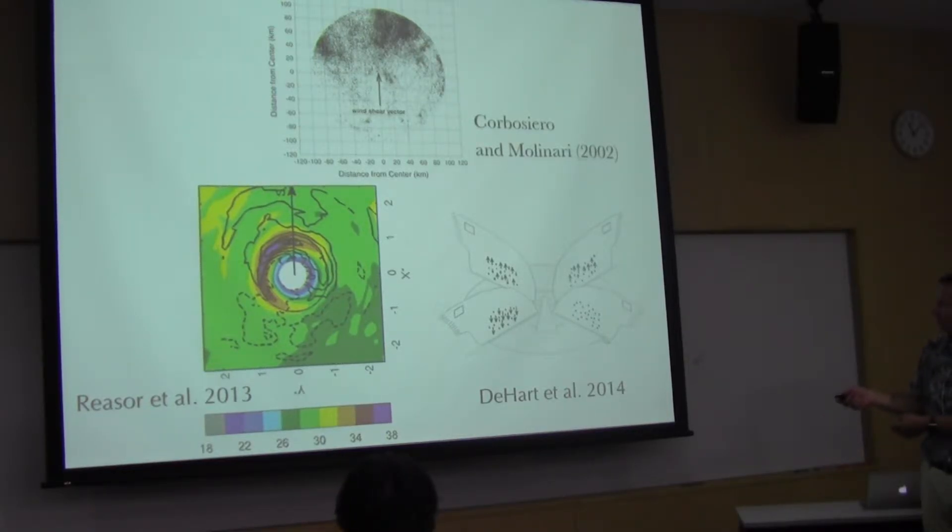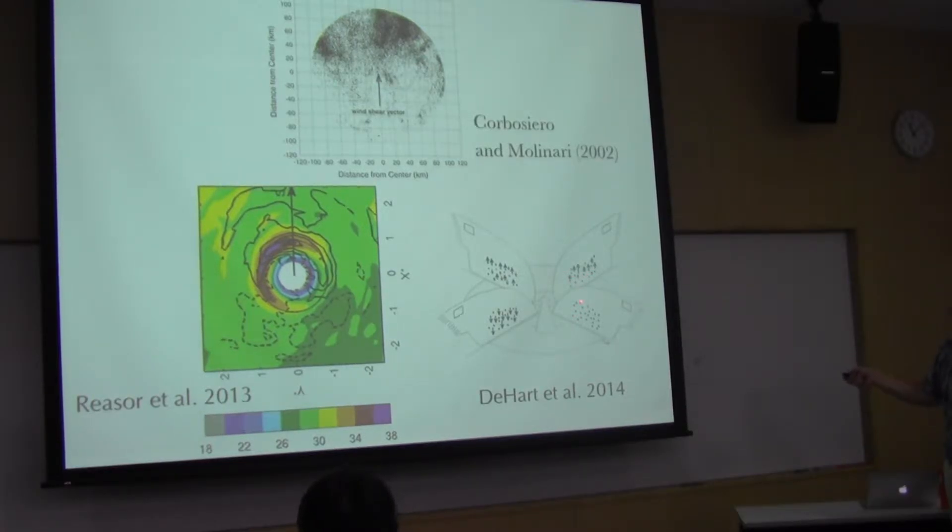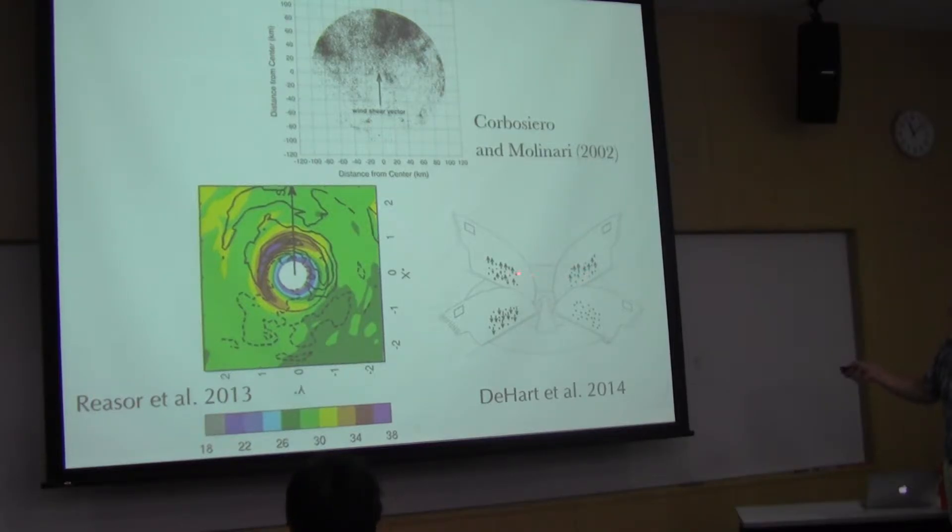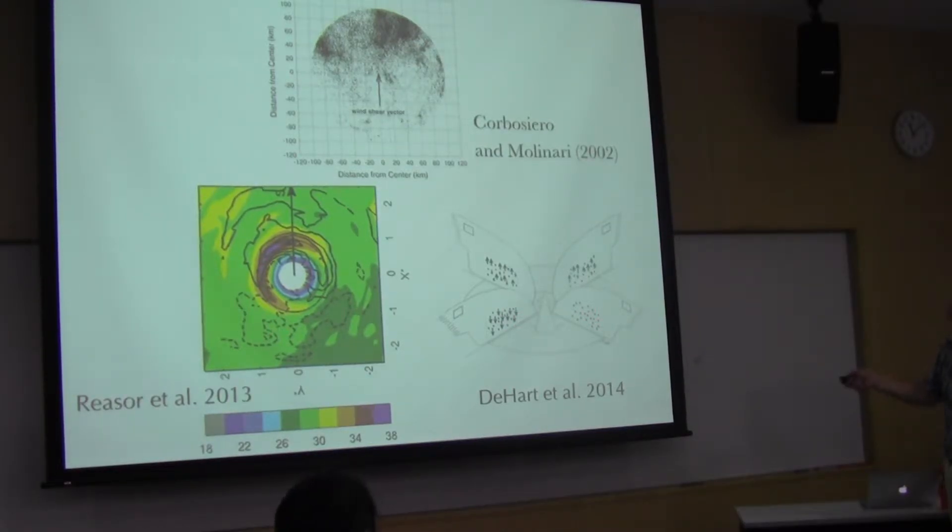The convection is being forced downshear, but the radar reflectivity shows up primarily left of shear due to azimuthal advection of the hydrometeors. That's an important point. Jen DeHart did a really nice study looking at the same database, where she looked at individual quadrants showing this initiation downshear right, maturation downshear left, and then strong downdrafts in the upshear left, and very weak motion in the upshear right quadrant. This structure shows up over and over and over again.